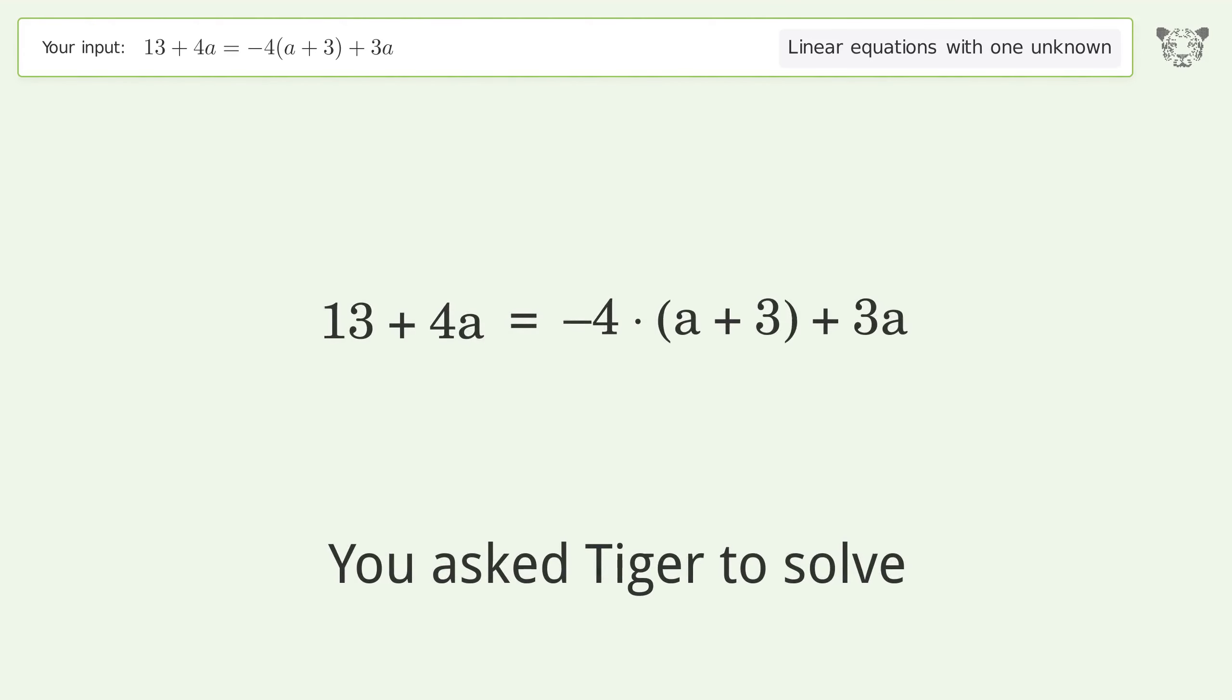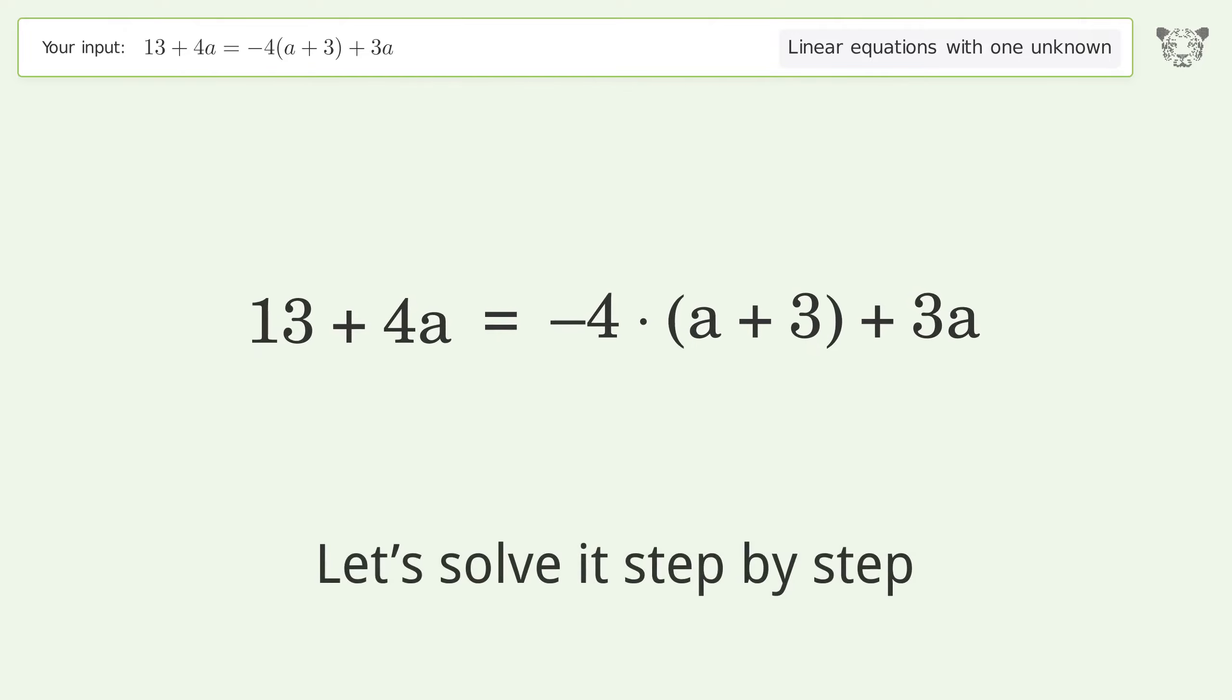Tiger will solve this linear equation with one unknown. The final result is a equals negative 5. Let's solve it step by step and simplify the expression.